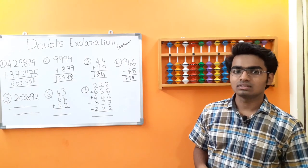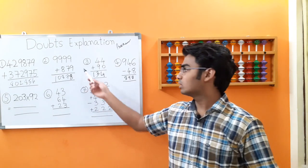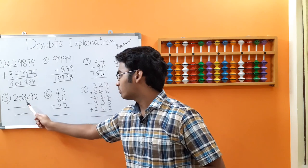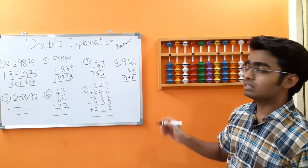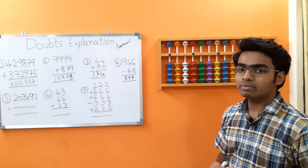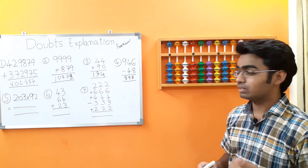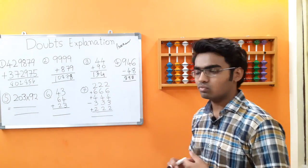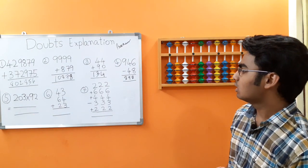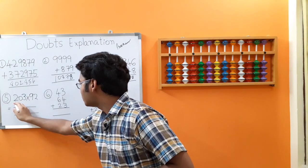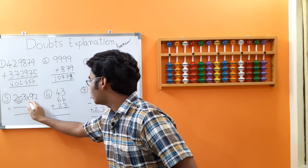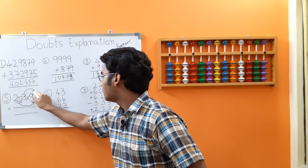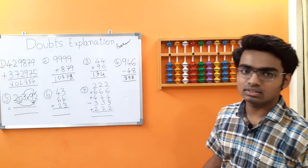Next up we have a multiplication — something different from what we have been doing. In our 5th doubt we have a 3-digit number multiplied with a 2-digit number: 203 into 92. We are going to split this into 2 multiplications as we have done in our previous videos — in our 3-digit into 2-digit multiplication video, I am going to put the link in the description, please go and watch it if you haven't yet. So we are going to split this into 20 into 92 first, and 3 into 92 second.